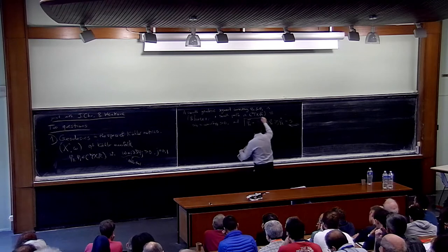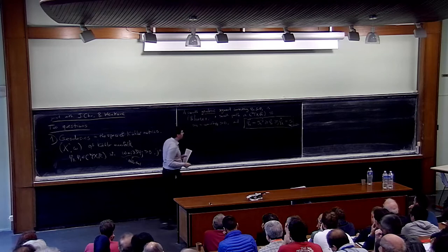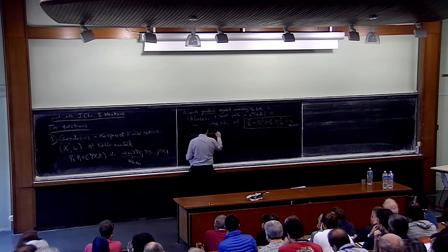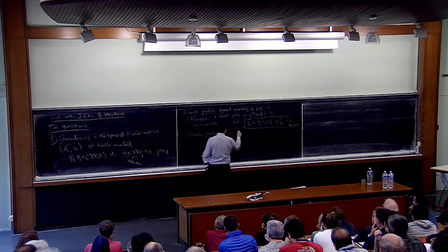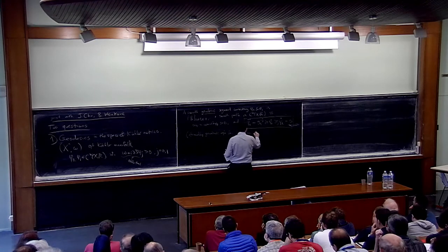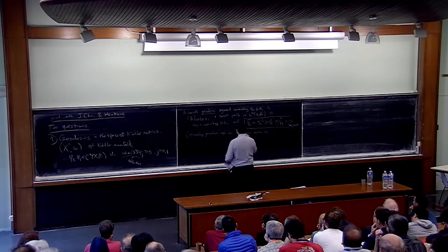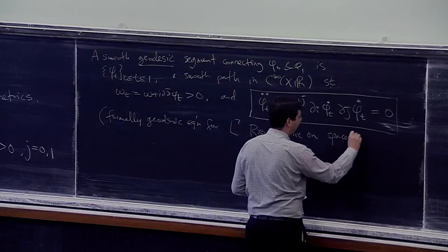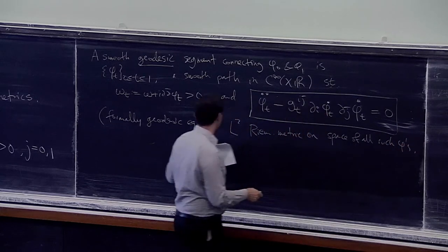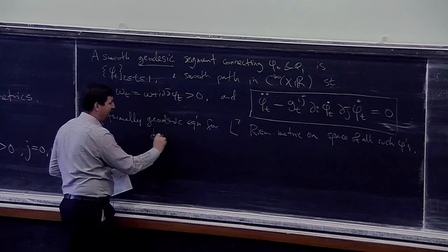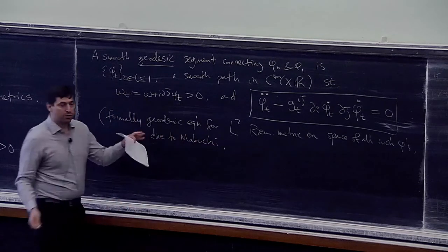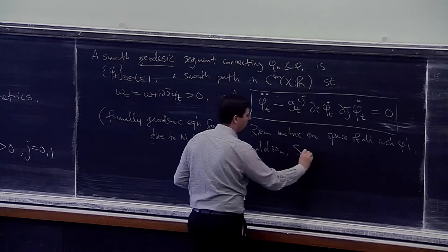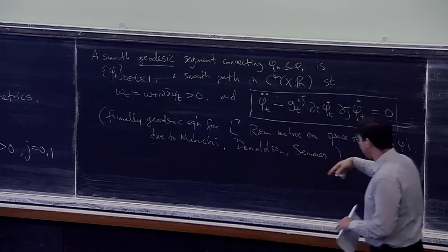Why is it a geodesic? This is formally the geodesic equation for an L^2-type Riemannian structure on the space of all such Kähler potentials. This L^2 metric is due to Mabuchi, who also wrote down the geodesic equation. Later, Donaldson and Semmes independently discovered this and more of what I'm going to say next.